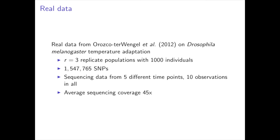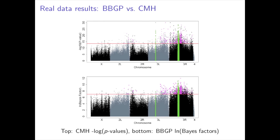Now let's have a look at the real data, where we have 3 replicate populations with 1000 individuals at 5 different time points, with 10 observations in all. In Orozco-Tarvangel's paper, a 1-megabase region was excluded from the analysis on 3R, as a low frequency haplotype spreads during the experiment. Also, the Korean gene cluster on 3L was excluded, as this region has extremely high coverage. These regions are shown in green in these figures. As we can see on the figure at the bottom, beta-binomial variance control is able to handle the high coverage problem in the region 3L.